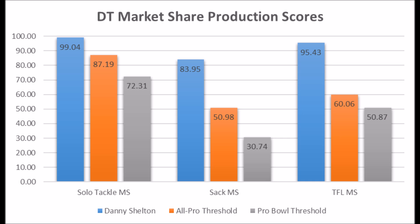Starting with Danny Shelton, his college data shows a 99.04 solo tackle mark share score, 83.95 sack mark share score, and 95.43 tackle-for-loss mark share score at Washington. A lot of people say nose tackles aren't productive — not Danny Shelton. By far, he's probably one of the most productive nose tackle types coming out of college in terms of pure production. His market share numbers are pretty amazing to see from a nose tackle type.